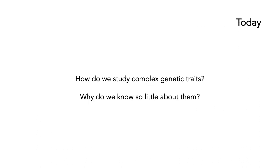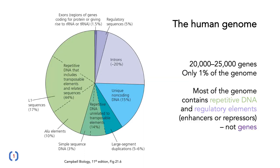Today we're going to look at how we study complex genetic traits and why we know so incredibly little about them. Let's go back and talk about the human genome. The human genome contains about 20,000 to 25,000 genes — not very many — and they only comprise about 1% of the genome. Most of the genome is made up of repetitive DNA, shown here in green. And there are regulatory elements, such as enhancers or repressors that turn genes on or off, shown here in light purple. Genes only make up a relatively small amount of the DNA we carry.